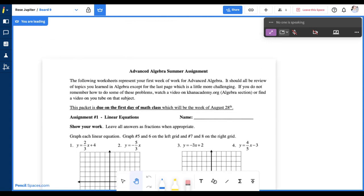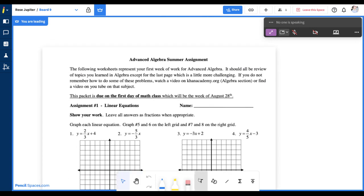When you have a PDF opened in Pencil Spaces, you have the ability to use any whiteboard tools on top of it, including the pen tool, highlighter, text tool, shape, and line tool.